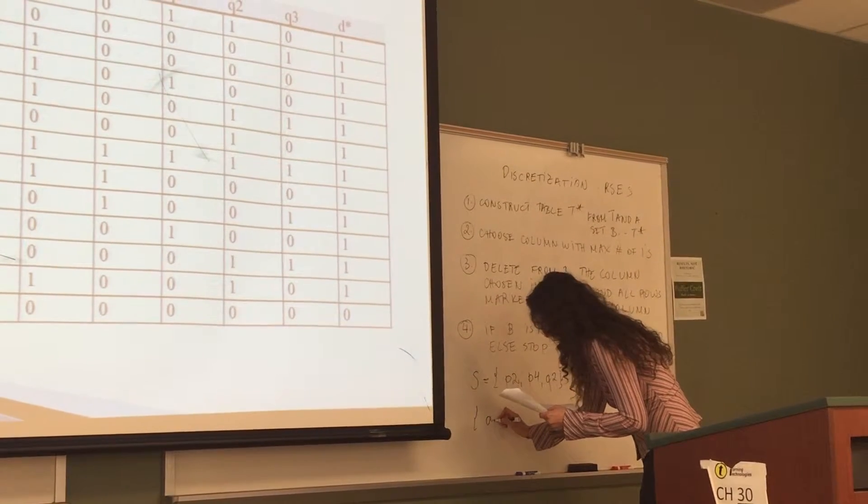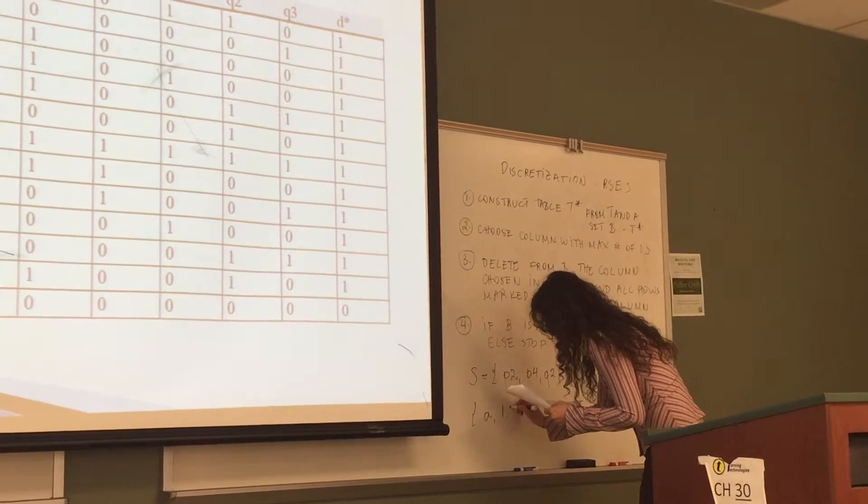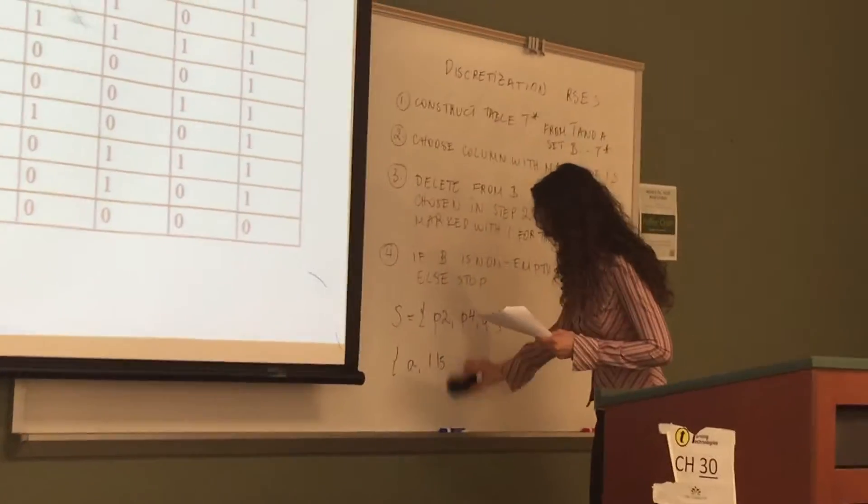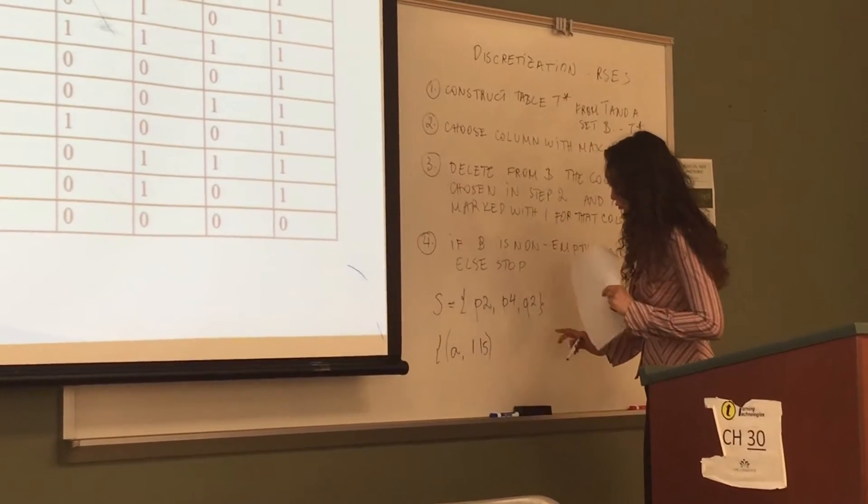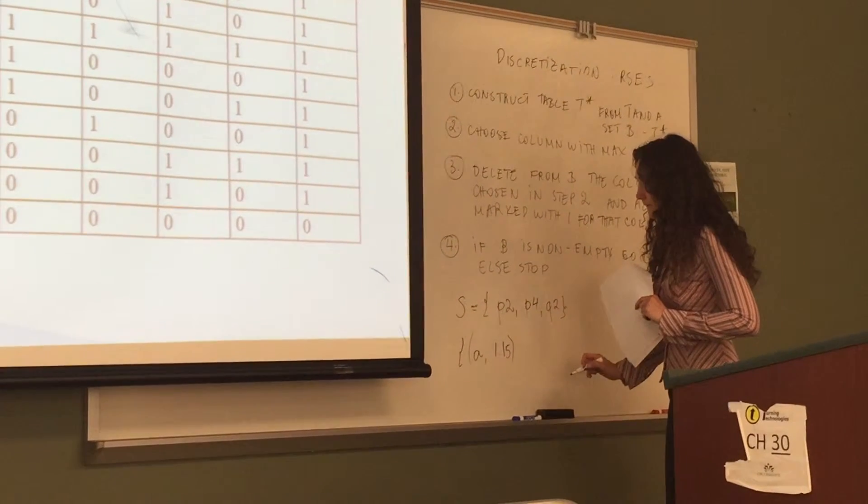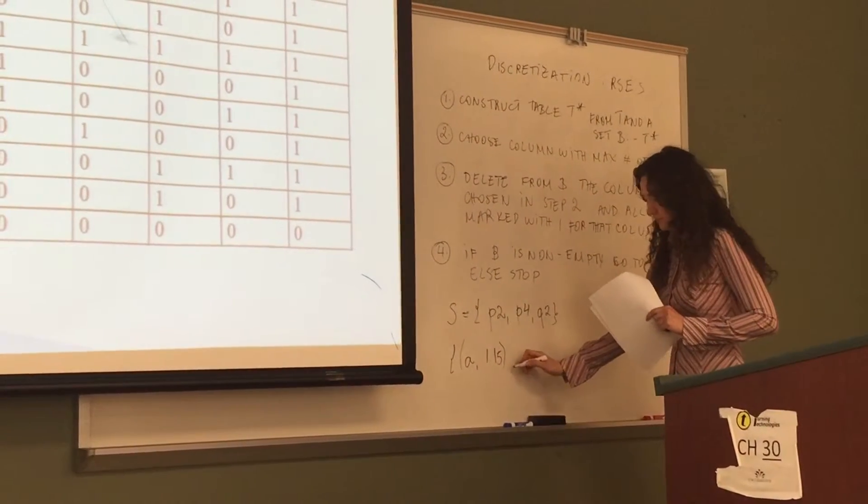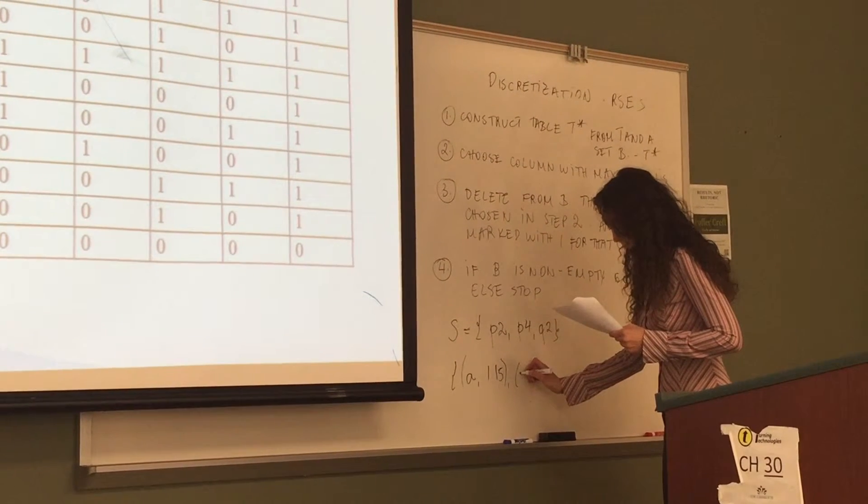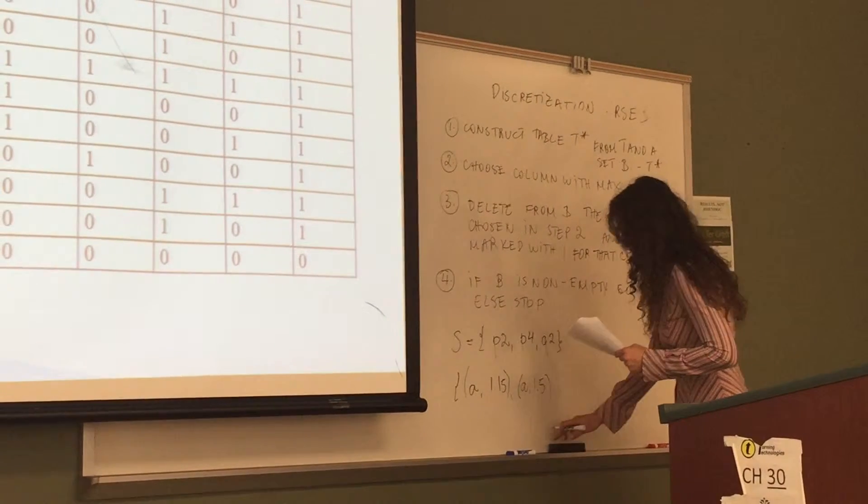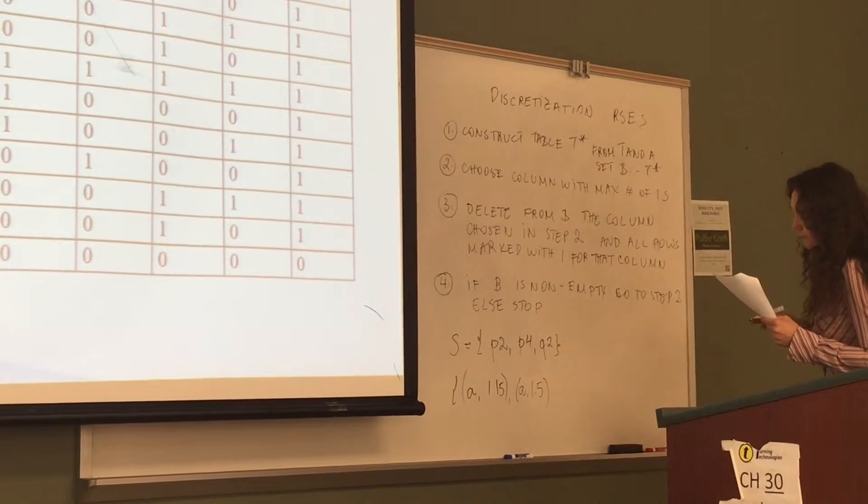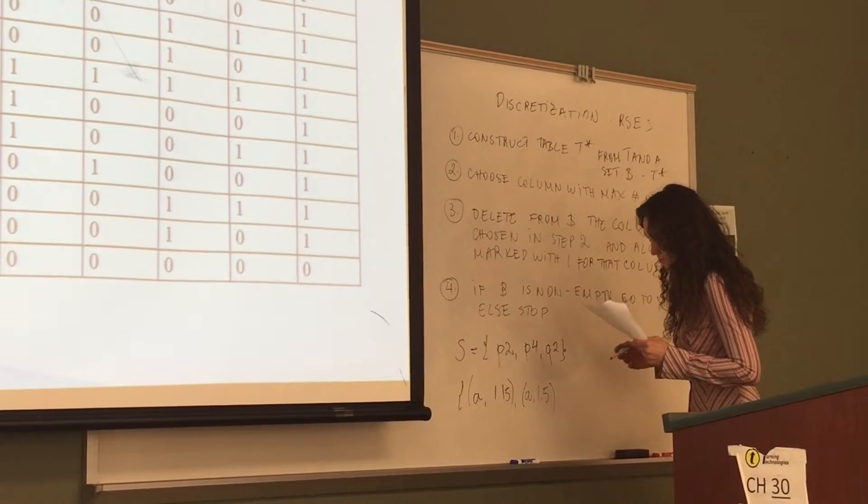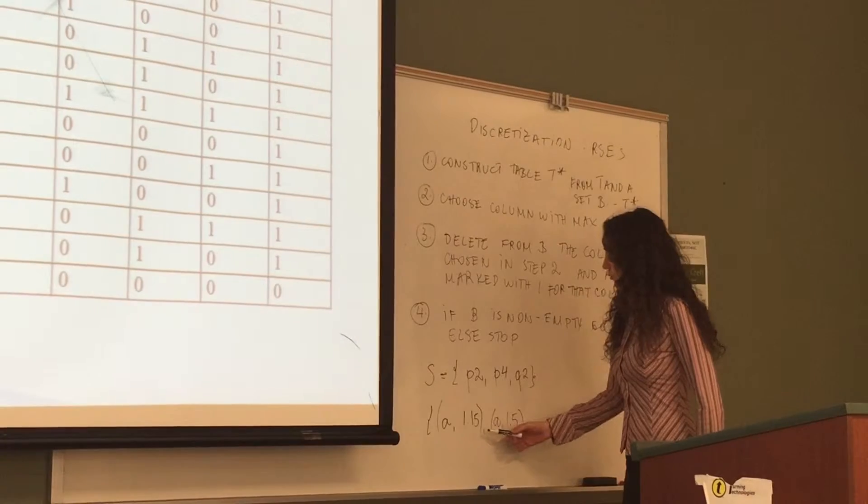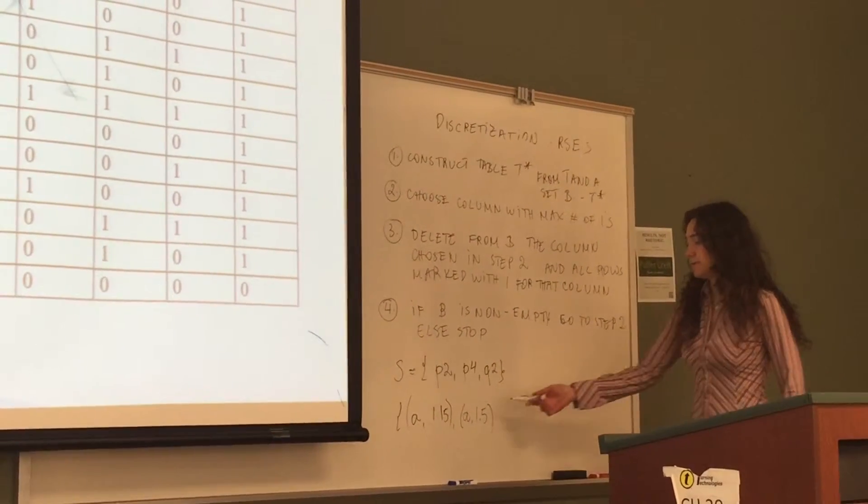So for attribute A, we will be cut into 2 pieces by this p2. I am sorry, for A we have 2 of them, p2 and p4, so the first one will be from beginning to 1.15, the second one will be from 1.15 to 1.5.